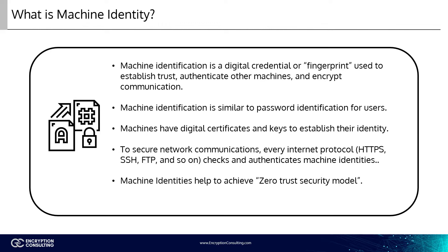Generally, user identity is represented by a username and password — such as when a user logs into an application, they enter their username and password, the application checks the credentials in the database, and if they match, the user is authenticated. A machine identification is much more than a digital ID number or a simple identifier like a serial number, a MAC address, or a part number. It is a collection of authenticated credentials that confirm that a system or user can access online services or a network.